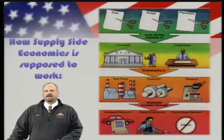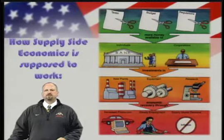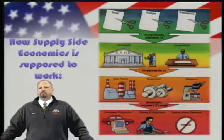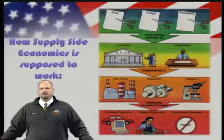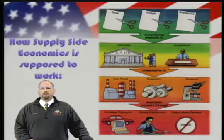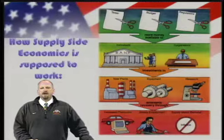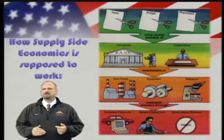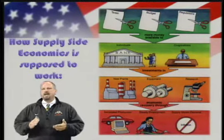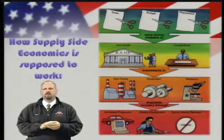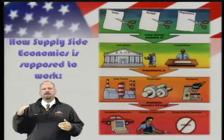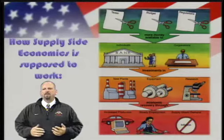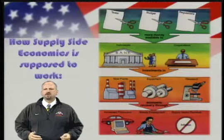Ronald Reagan advocated supply-side economics, also known as trickle-down economics. This graphic shows how it works. The government starts by cutting — it cuts taxes, it cuts the budget, and it cuts regulations. The idea is that if the government cuts these things, more money will be available to industries, corporations, and individuals.